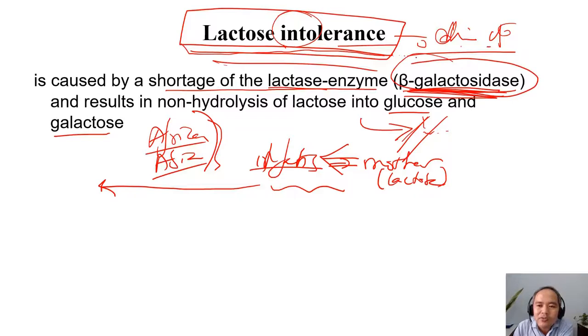Because this enzyme has no function. So either the body will not produce, or the body produces the enzyme, but the activity of the enzyme is too low.